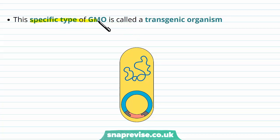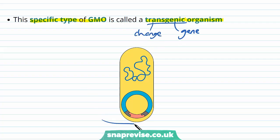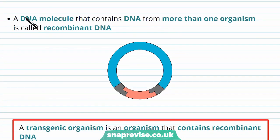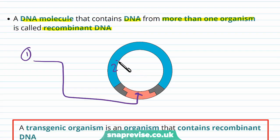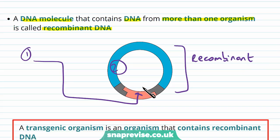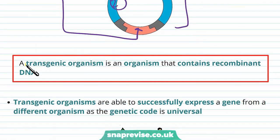When we carry out this process, this specific type of GMO is called a transgenic organism. Transgenic refers to genes, and 'trans' tends to mean transform or changing — so we've taken the gene from another organism and created a transgenic organism. A DNA molecule which contains DNA from more than one organism is called recombinant DNA, because it's been recombined to contain new DNA from another organism. So a transgenic organism is an organism which contains recombinant DNA — its DNA contains not only its own genes but also DNA from another organism.